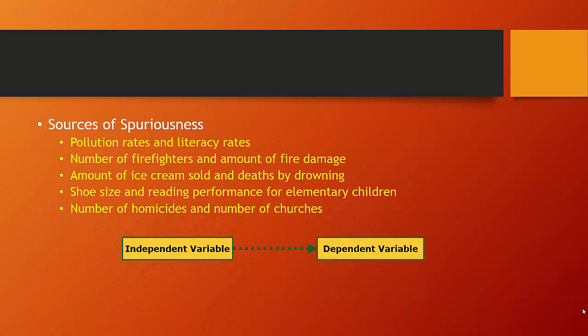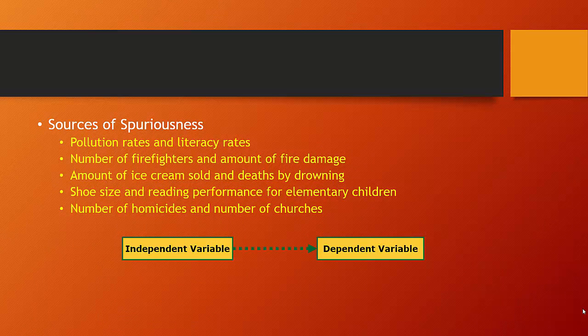Let's consider potential sources of spuriousness. As you look at these five examples, there is a relationship between all of them. However, an unobserved third variable is actually causing both of the variables. For example, there's a correlation between pollution rates and literacy rates. Is pollution causing people to be better readers? There's a correlation between the number of firefighters and the amount of fire damage in any given county. Are firefighters causing the fire damage? There's a strong relationship between the amount of ice cream sold and the number of deaths by drowning observed. There's a relationship between shoe size and reading performance for elementary school children and the number of homicides and the number of churches.